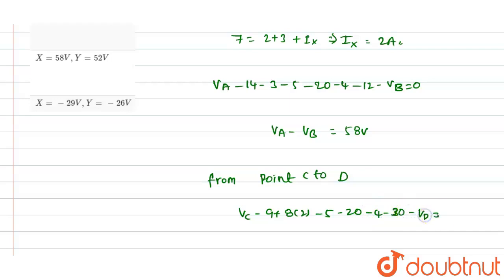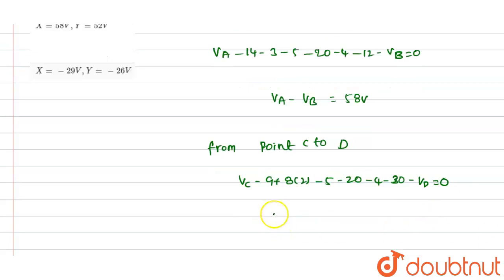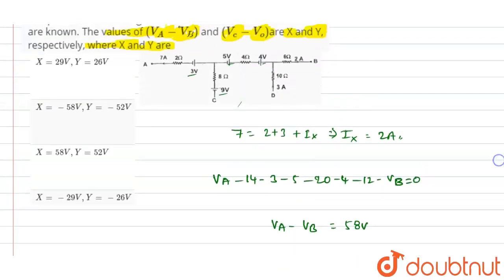Vc minus Vd will be equals to zero and the potential difference between c and d, that means Vc minus Vd will be equals to 52 volts. So out of these four options we see option c: we have x is equal to 58 volts and y is equal to 52 volts.